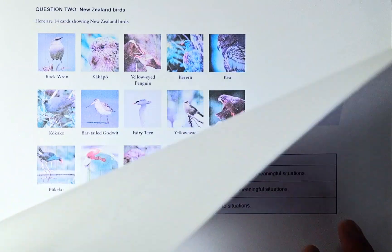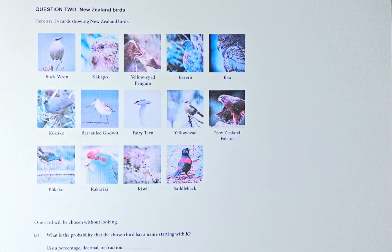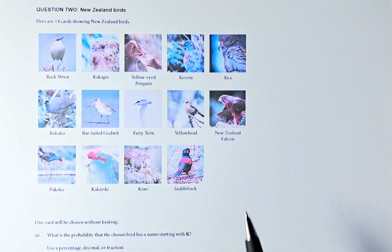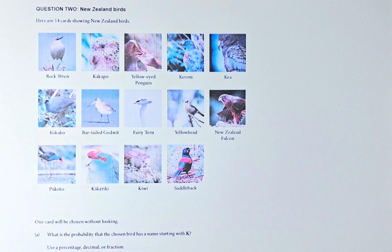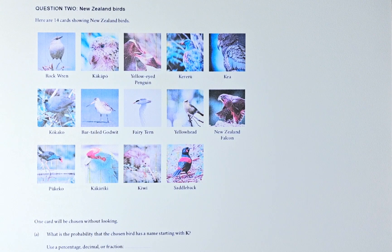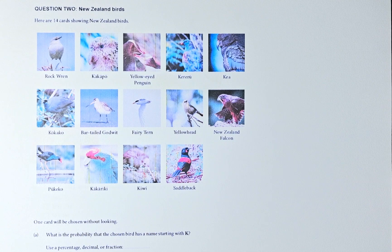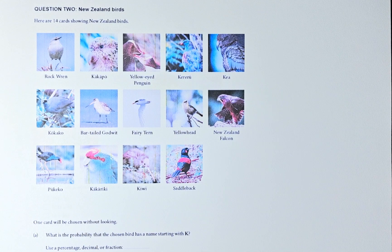So now we will look at question 2A. The question is: here are 14 cards showing 14 different New Zealand birds. So there are 14 cards in total. One card will be chosen without looking. What is the probability that the chosen bird has a name starting with the letter K?